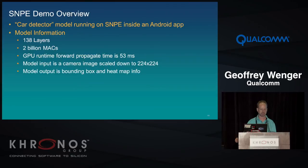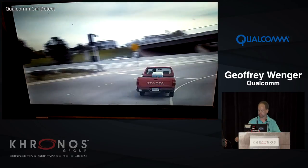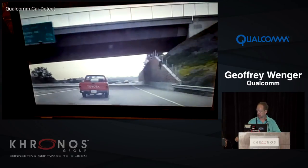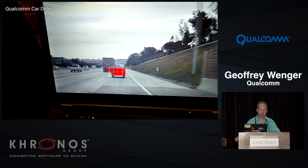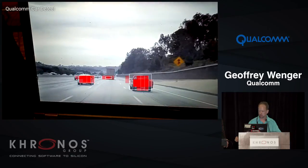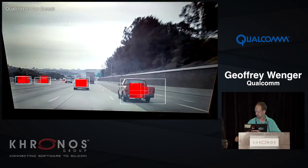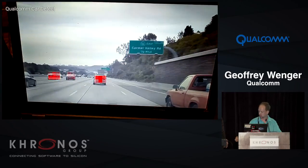In our main demo, a car detector model running on Snappy runs inside an Android app. The model is 2 billion MACs (4 gigaflops) with a forward propagation time of 53 milliseconds. The output is a bounding box and heat map showing highest network activations corresponding to cars. What's displayed is raw video of a driving scene, and each updated bounding box and heat map represents a full forward pass of the network — no computer vision optimization techniques are used. The model performs well for cars seen from behind and cars large enough in frame.